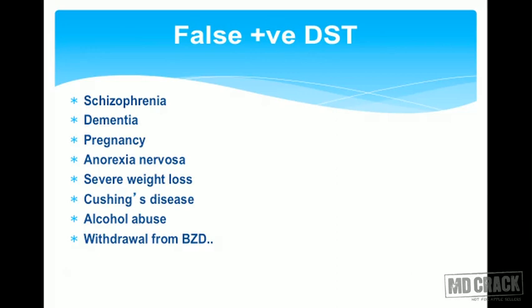False positive dexamethasone suppression test may be present in various conditions, including schizophrenia, dementia, pregnancy, anorexia nervosa, severe weight loss, Cushing's disease, alcohol abuse, and patients who are withdrawing from benzodiazepines.